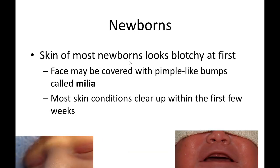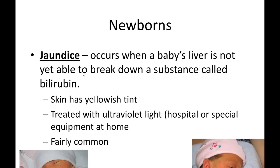Another common newborn condition is milia — small whitish pimple-like spots on the skin. These are very common on newborns and will settle within a few weeks. Jaundice is also common in newborns because the baby's liver is not yet fully developed and cannot break down bilirubin efficiently, causing the skin to appear yellowish.